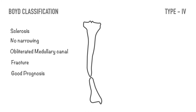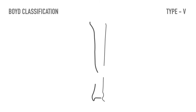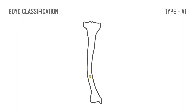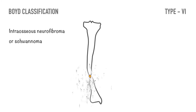Type 4 has a good prognosis when treated before the insufficiency fracture becomes complete. In type 5, pseudoarthrosis of the tibia occurs with a dysplastic fibula. The prognosis is good if the lesion is confined to the fibula; if it progresses to tibial pseudoarthrosis, the natural history usually resembles that of type 2. In type 6, pseudoarthrosis occurs as an intraosseous neurofibroma or schwannoma — an extremely rare condition — and prognosis depends on the aggressiveness and treatment of the intraosseous lesion.